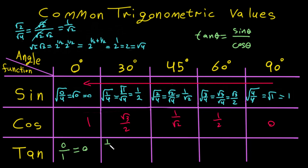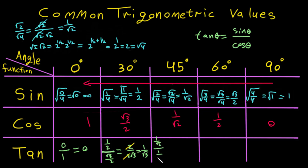For 30 degrees: sine is 1 over 2 and cosine is square root of 3 over 2. Dividing gives 1 over square root of 3. For 45 degrees: sine and cosine are both 1 over square root of 2, so they cancel and the answer is 1.